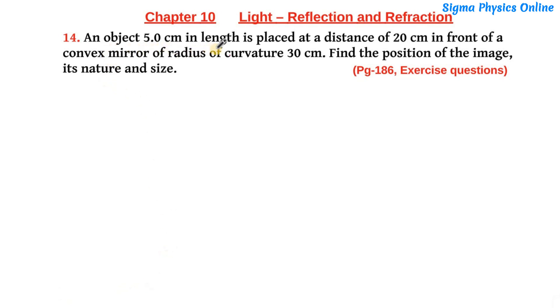An object 5 cm in length is placed at a distance of 20 cm in front of a convex mirror of radius of curvature 30 cm. Find the position of the image, its nature and size.